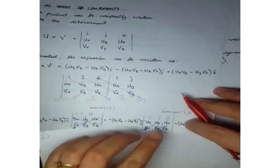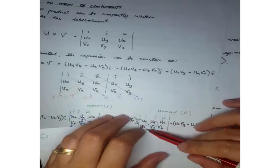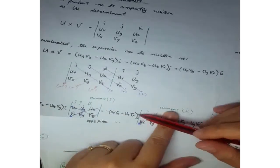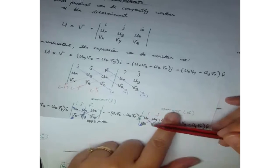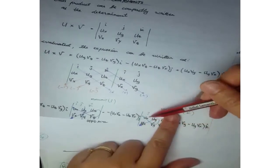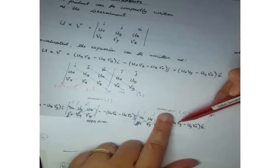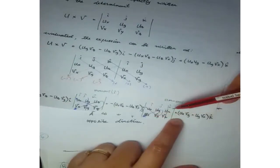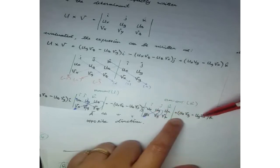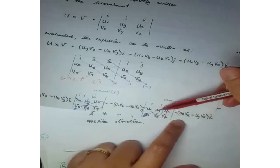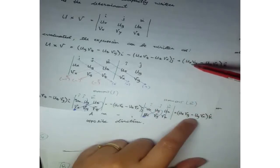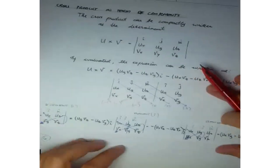For element K, we again write the I, J, K and the X, Y, Z components of U and V, cover the K column, and follow the same pattern. We multiply Ux·Vy minus Uy·Vx. So the K element is Ux·Vy minus Uy·Vx.